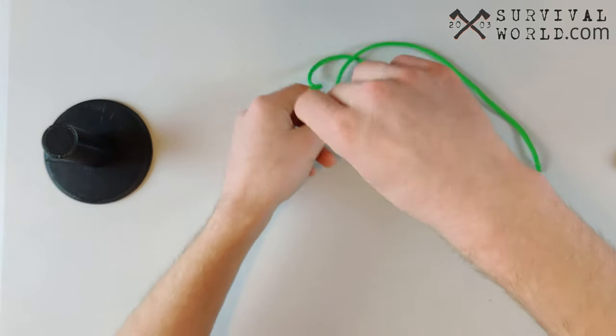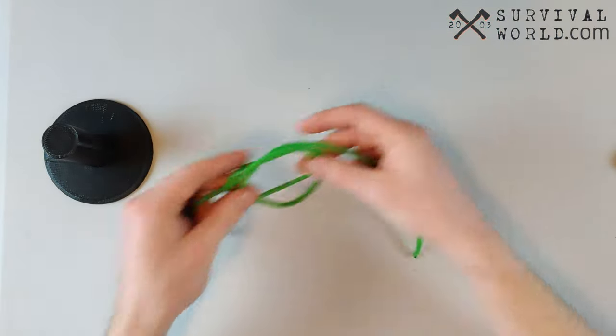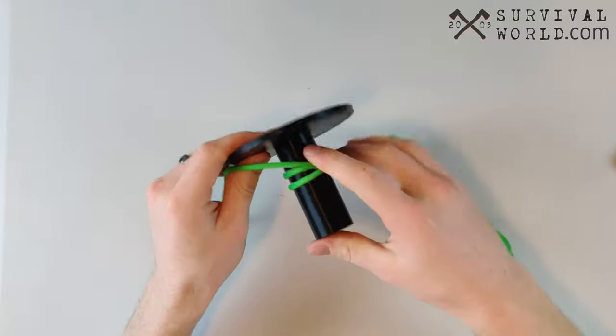So we're grabbing it, we're twisting it in and under to create that. Then we can just grab our loop here, chuck it over anything we want to tie to, and boom there you have it. I'll show you guys that again.